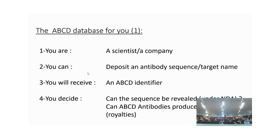If you're selling in a catalog, you can say this is AC123, which is directly derived from the sequence. You can decide whether the sequence can be revealed — we don't put sequences online, but when researchers ask, we check whether we're allowed to release it. If you're a researcher not producing and distributing, you can ask us to do it, and we produce, distribute, and give royalties.